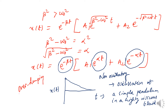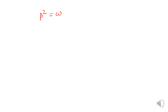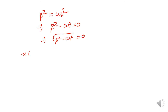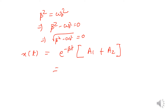This gives the case of over-damping. Now, what is critical damping? In the third case, β² = ω₀², so β² − ω₀² = 0 and √(β²−ω₀²) = 0. Our general solution becomes e^(-βt) · [A₁·e^0 + A₂·e^0] = e^(-βt) · (A₁ + A₂). We can write this as a constant multiplied with e^(-βt) as the solution for critical damping. This clearly gives exponential decay.